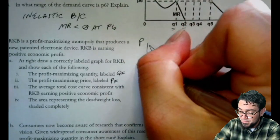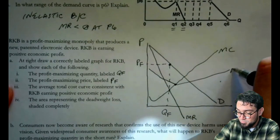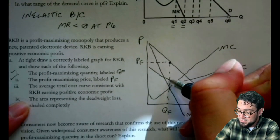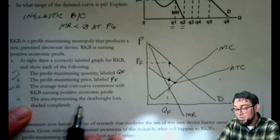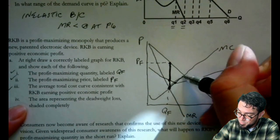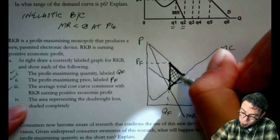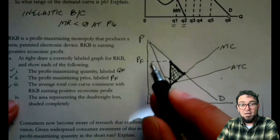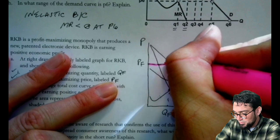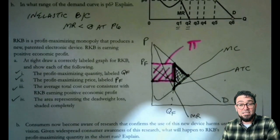And so the price is going to be up here on the demand curve, P sub F. And it does tell me that they're earning a profit. So I'm going to actually come down, hit my minimum here, and then come back up again with my ATC. I have taken care of first and second, the profit, now the average total cost curve consistent with RKB earning a positive economic profit. That's just saying that this ATC number has to be less than P sub F. And the area representing deadweight loss shaded completely. And so deadweight loss, I'm going to come down from the quantity that we're producing all the way over to that marginal cost curve, up the marginal cost curve to that socially optimal quantity, and then come here up the demand curve. So it's that kind of triangle pointing us to the right direction. The profit that this firm would be earning would be all the way down to that ATC and over. And so this is our profit. It's not something that it asked us to do, but it is useful to be able to identify.